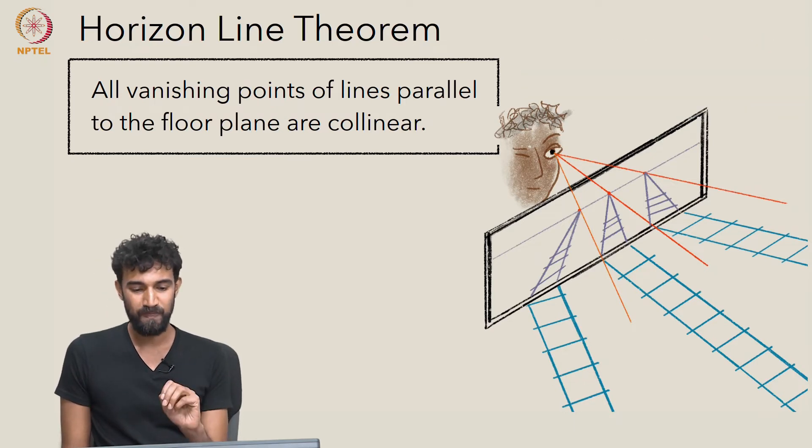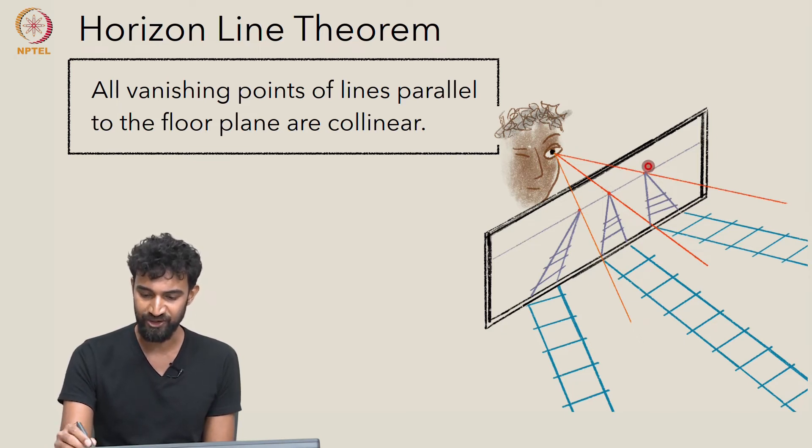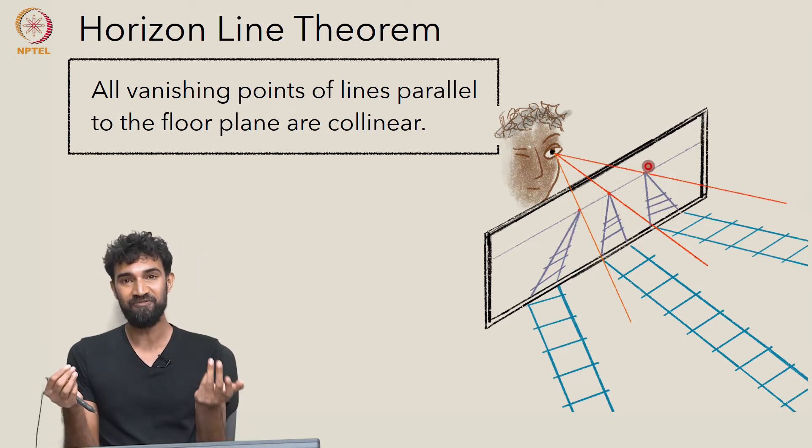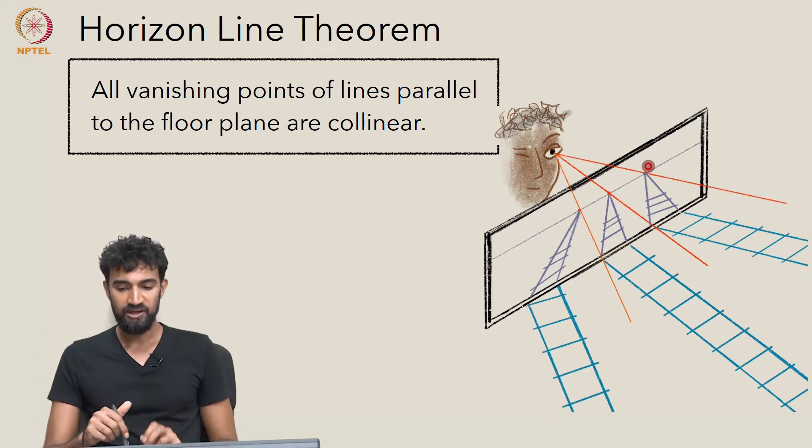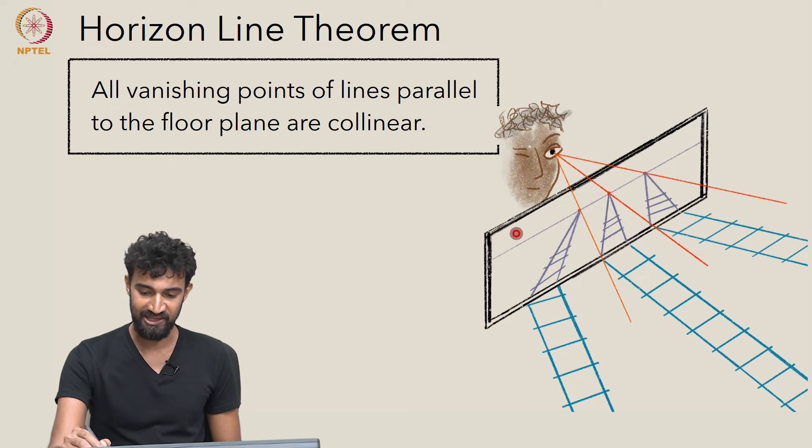So why are all of these vanishing points collinear? Why are all the possible vanishing points you'll get from lines that are parallel to the floor going to all lie on this horizon line?